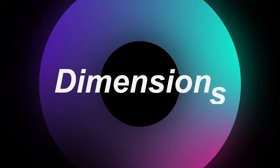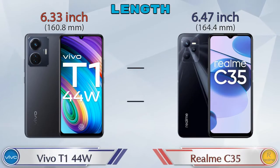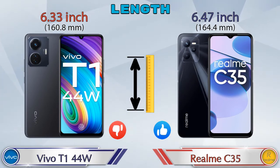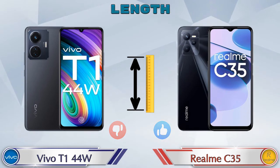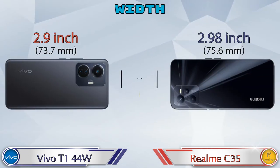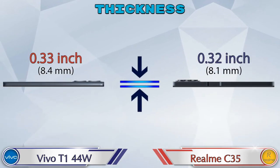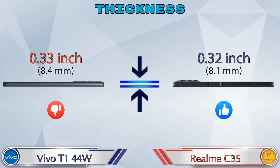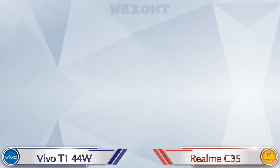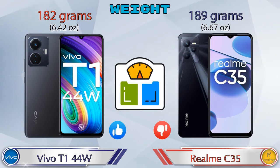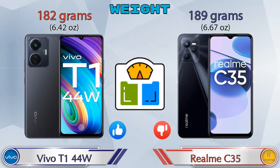Now let's check the dimensions. Length: the T1 44-watt is 6.33 inches and the Realme Narzo 35 is 6.47 inches. Width: the T1 44-watt is 2.9 inches and the Realme Narzo 35 is 2.98 inches. Thickness: the T1 44-watt is 0.33 inches and the Realme Narzo 35 is 0.32 inches. Weight: the T1 44-watt is 182 grams and the Realme Narzo 35 is 189 grams, making it heavier.